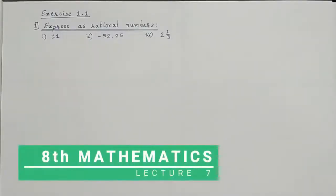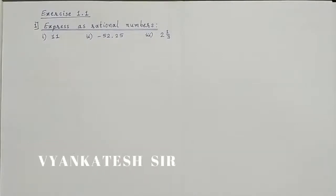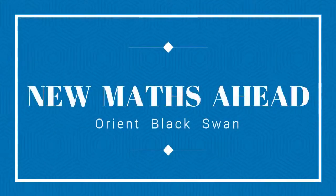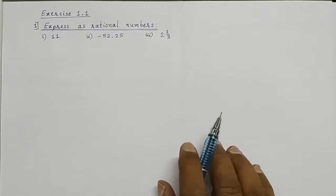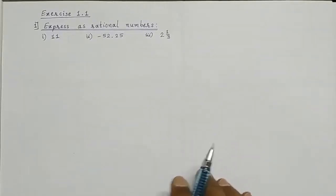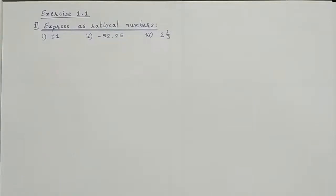Namaste students. Today we will see our new textbook. This year we have from that textbook exercise 1.1, which says express as rational numbers. We have all seen how we define rational numbers — integer upon integer is called a rational number.